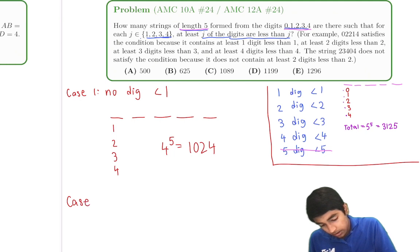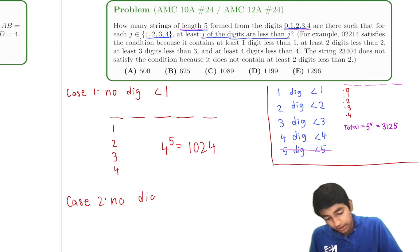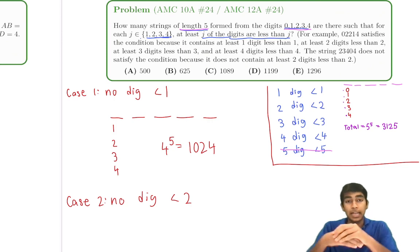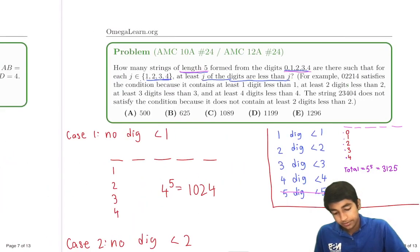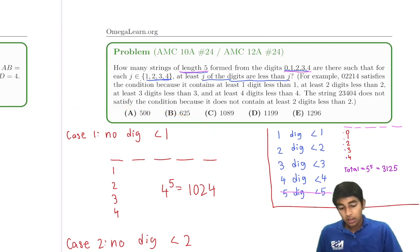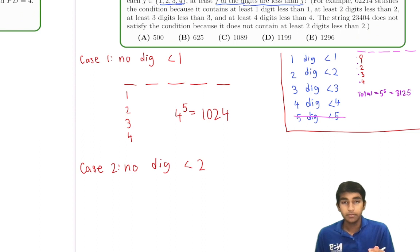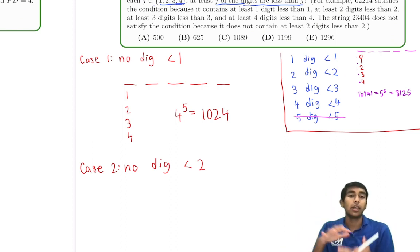Case 2: we find strings that fail the second condition but already satisfy Case 1. Rather than using inclusion-exclusion, we count strings that do satisfy the first condition but fail the second — meaning they have 0 or 1 digits less than 2, yet still contain a 0.